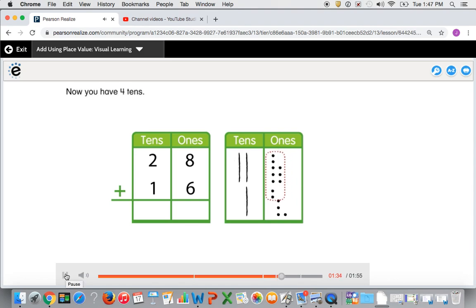Now you have 4 10s. Now you can finish adding. 4 10s and 4 1s is 44.